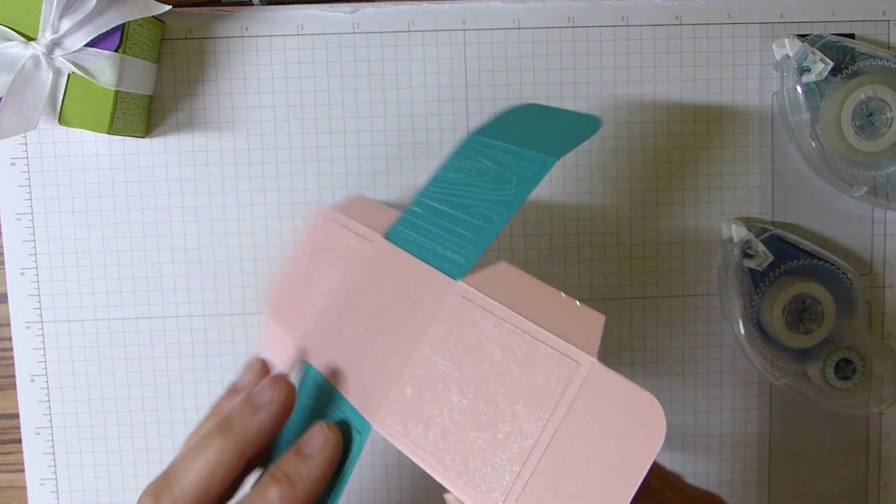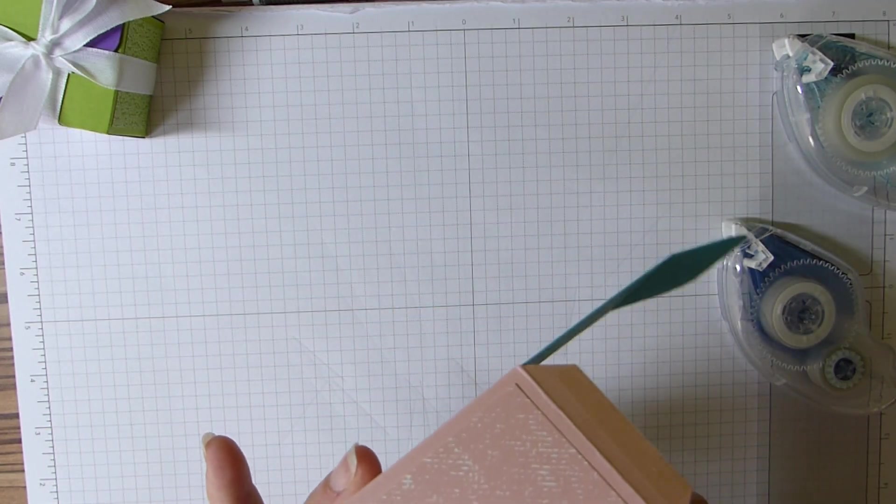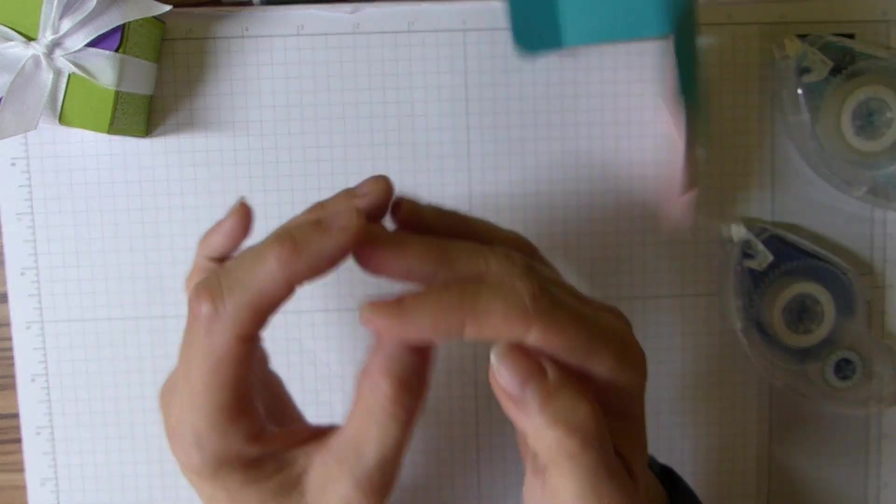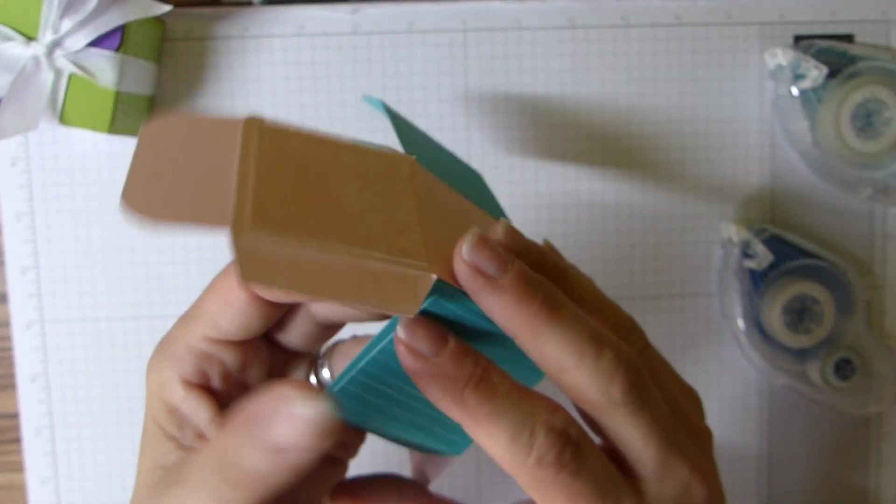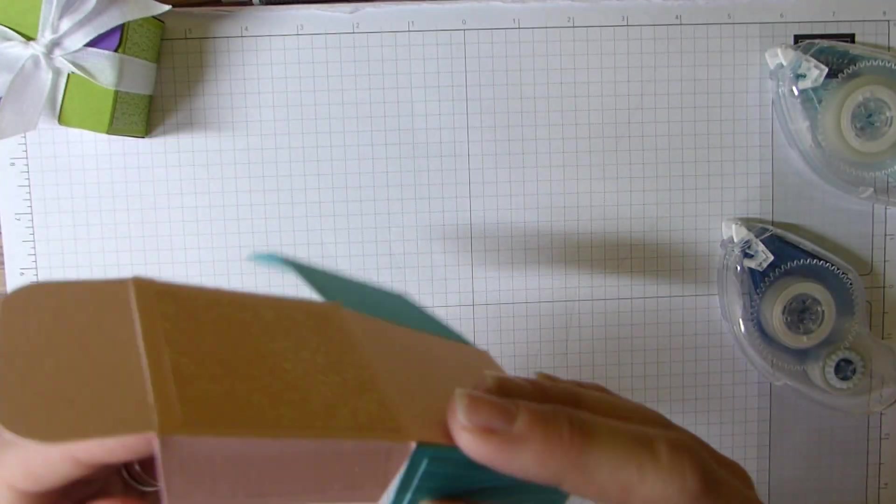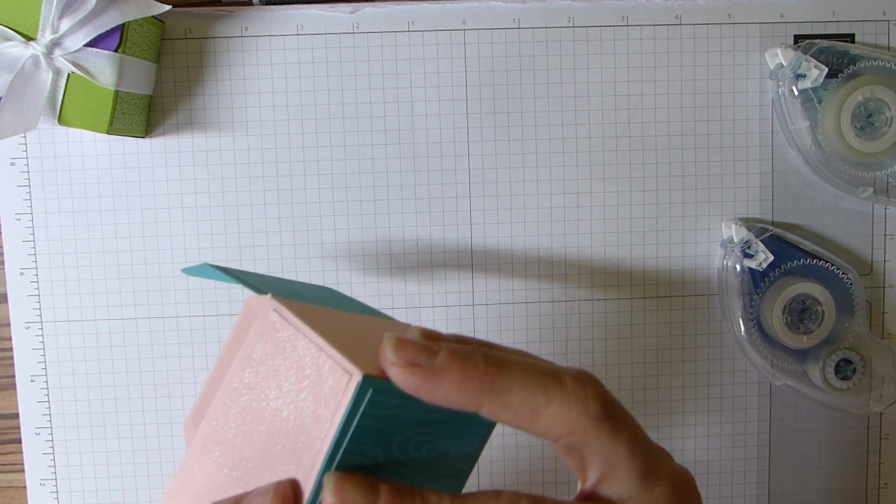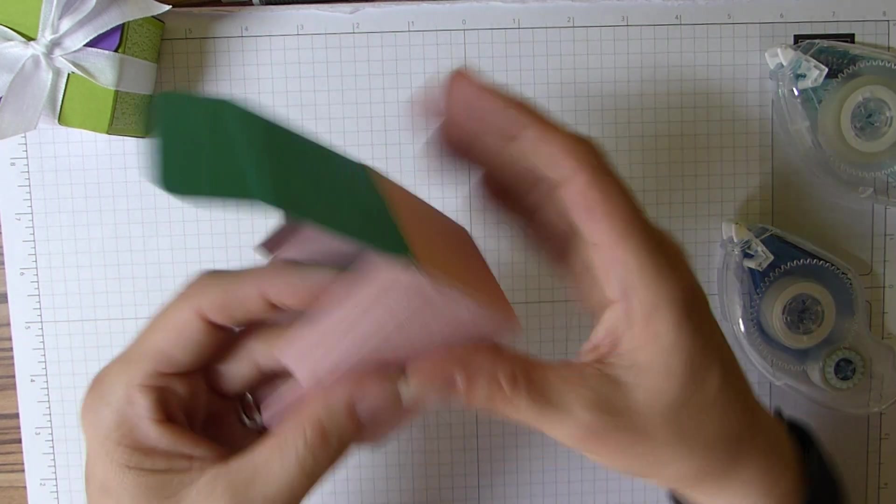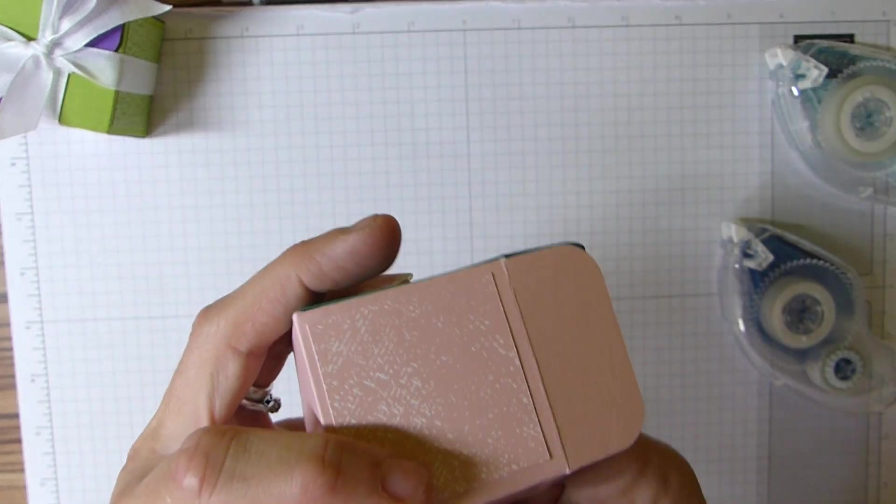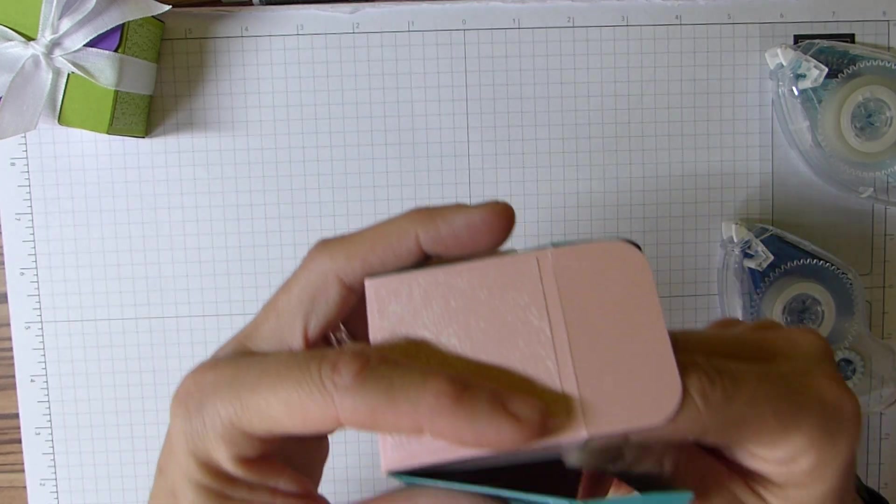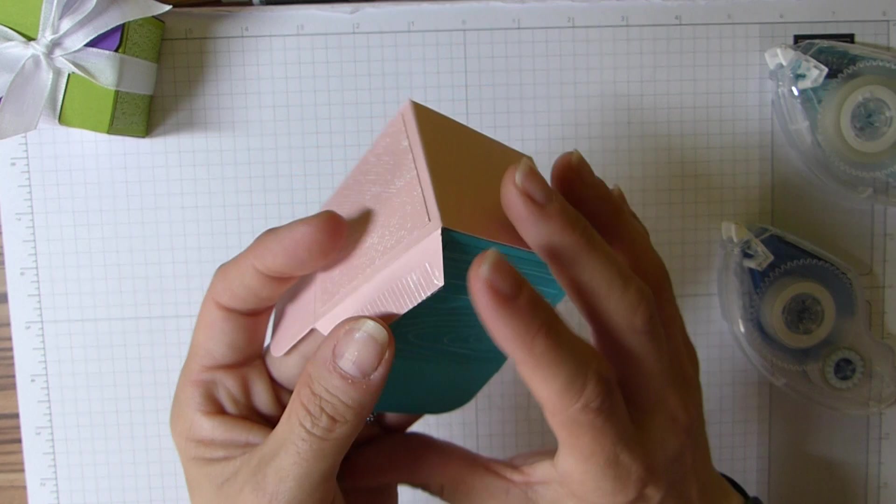Then you're just making it up like you would any other box really, so we're just popping these sides together, lining them up.